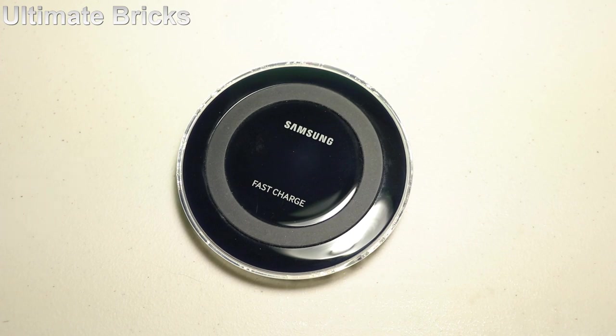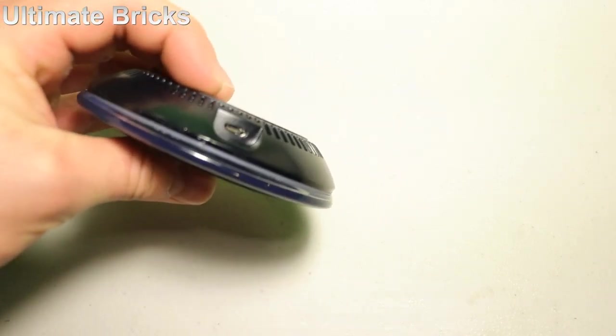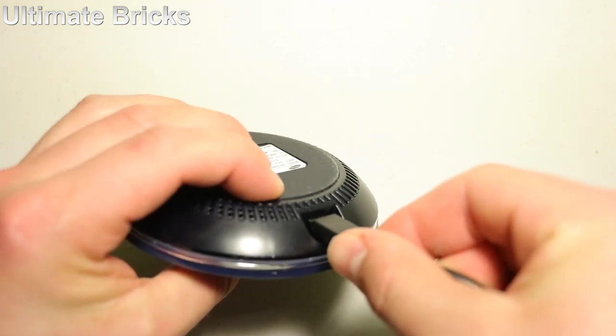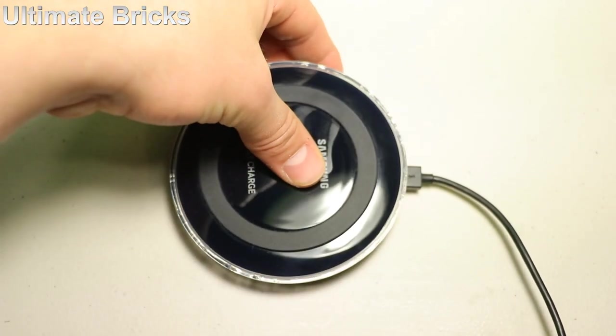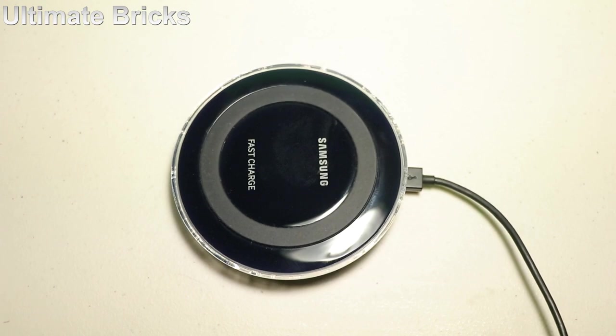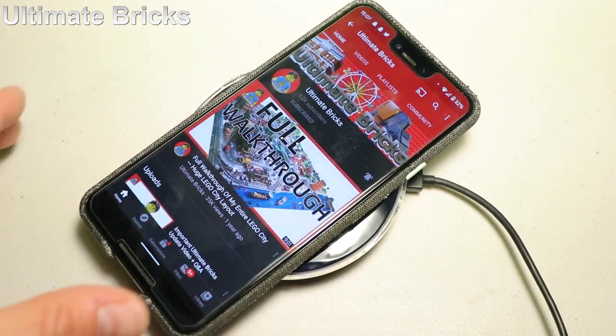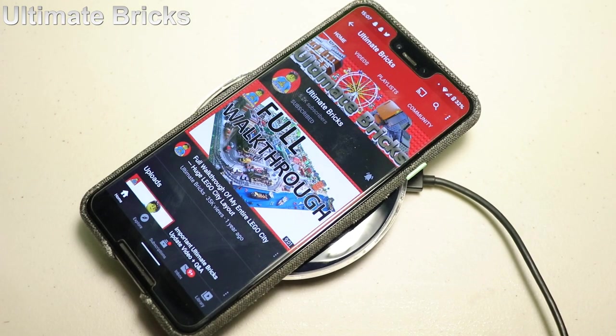First off, how it works is it needs to be plugged in from a USB micro port right there. So you just plug that in, and then when it's sitting down, simply put down a compatible smartphone and it will begin charging, just like that.